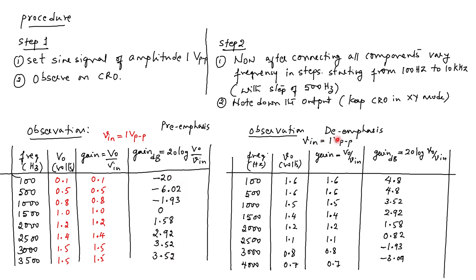Similarly for de-emphasis, keeping the input voltage amplitude at 1 volt peak-to-peak, we varied the frequency from 100 to 4000 Hz with a step size of 500 hertz and obtained the output voltages. De-emphasis is just the opposite of pre-emphasis and the results are tabulated here.